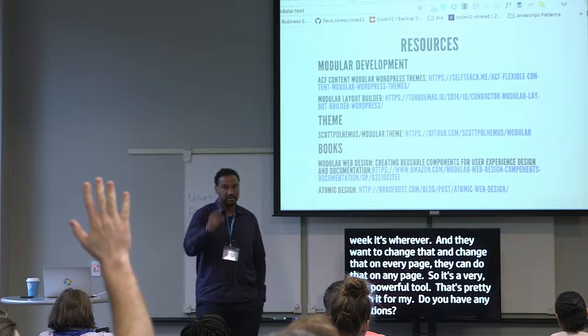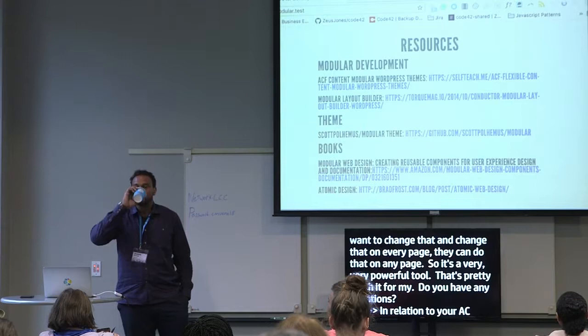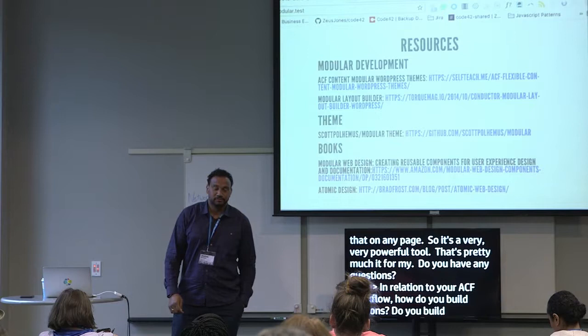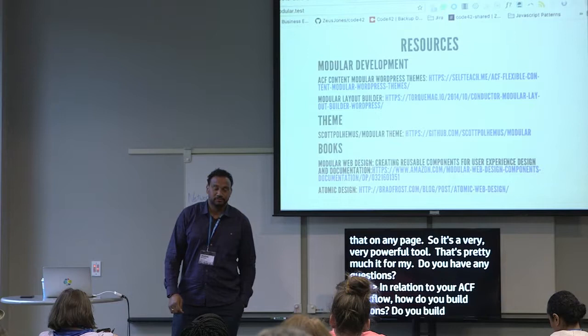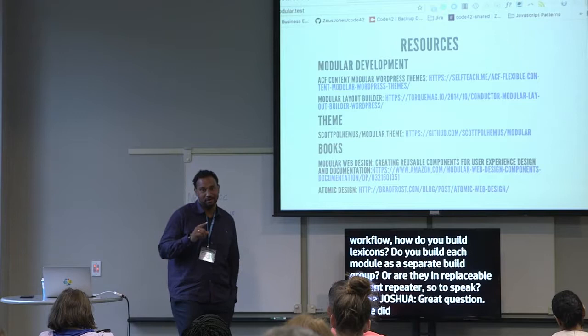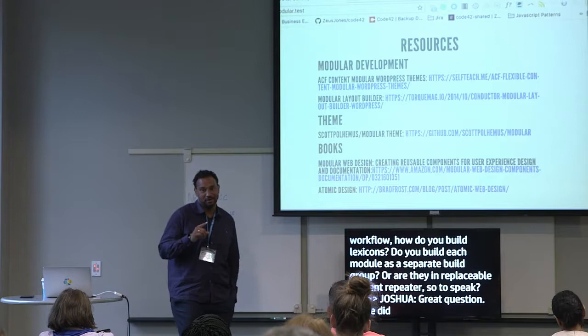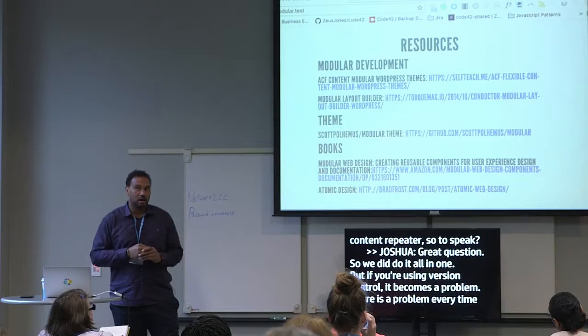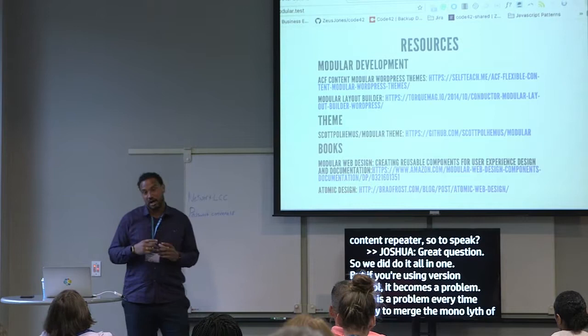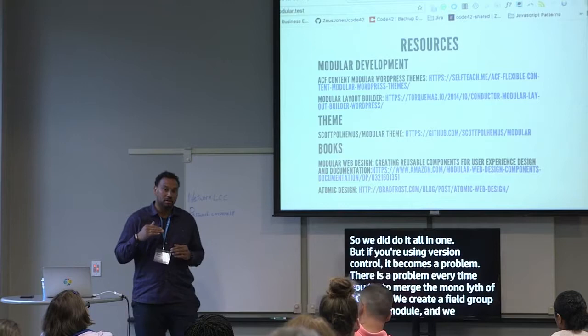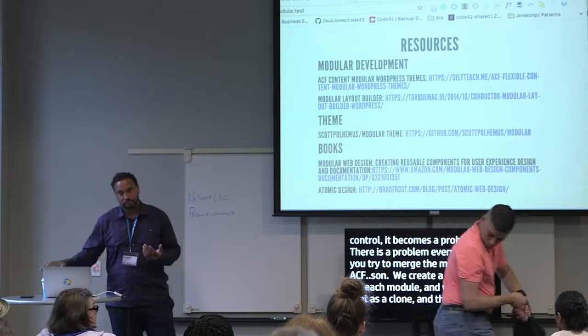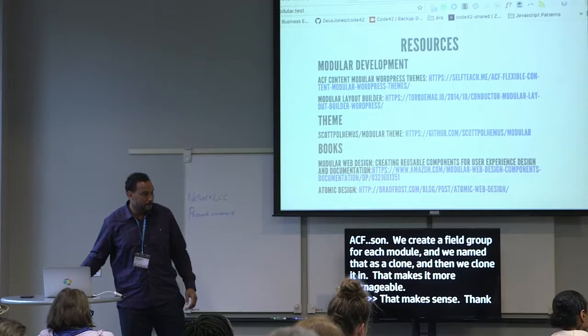That's pretty much it for me. Any questions? In relation to your ACF workflow — do you build each module as a separate field group, or are they all in a flexible content repeater? Great question. We did do it all in one, but if you're using version control, it really becomes a problem — there's almost a merge conflict every time you try to merge that monolith of ACF JSON. So what we ended up doing is creating a field group for each module, naming it as a clone, and then cloning it into our repeater. That makes it a lot more manageable.